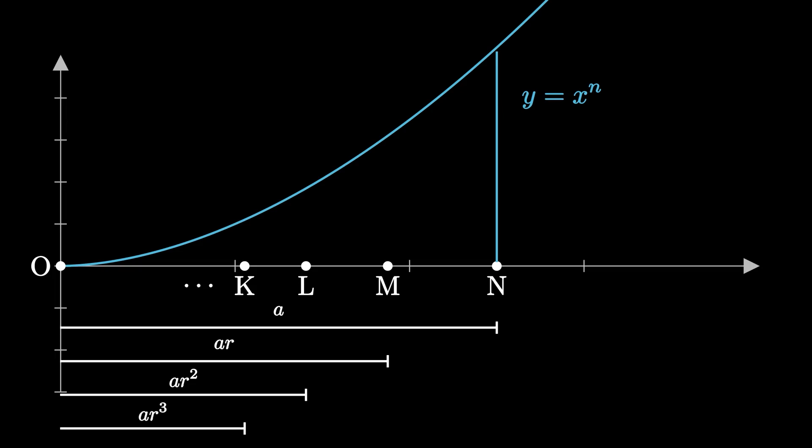Now, we can draw rectangles that reach to the height of the graph at the rightmost point of each subinterval. Notice that the height of the graph at each point is just its distance from o to whatever point to the nth power. So, at the point n, the height is a to the n, and at m,